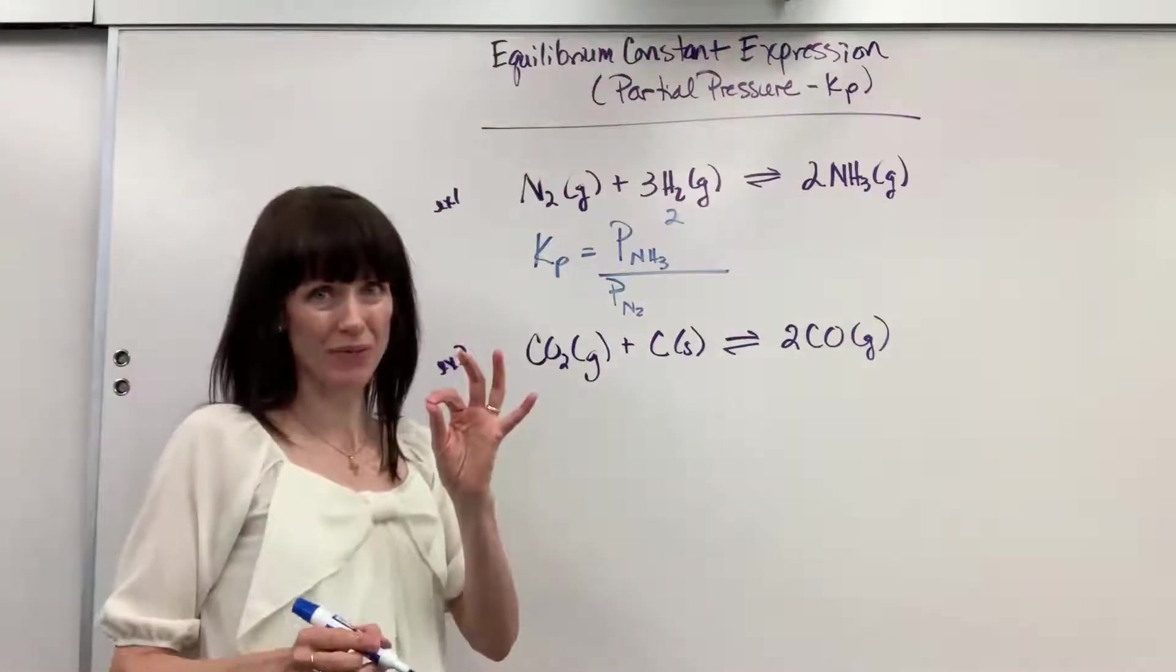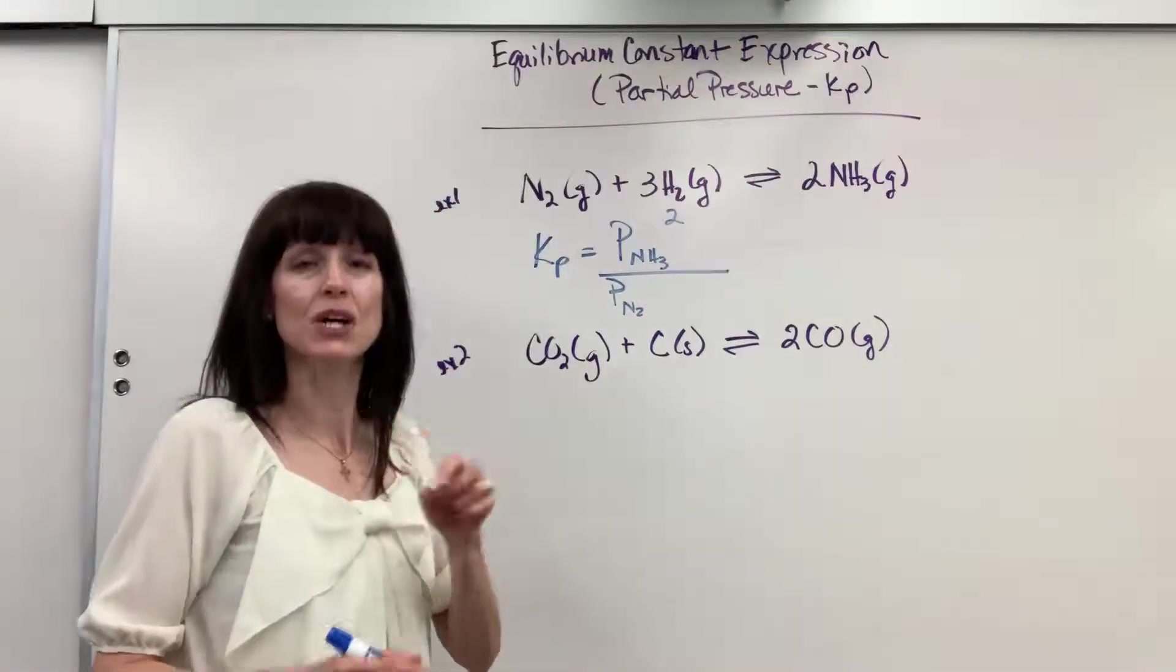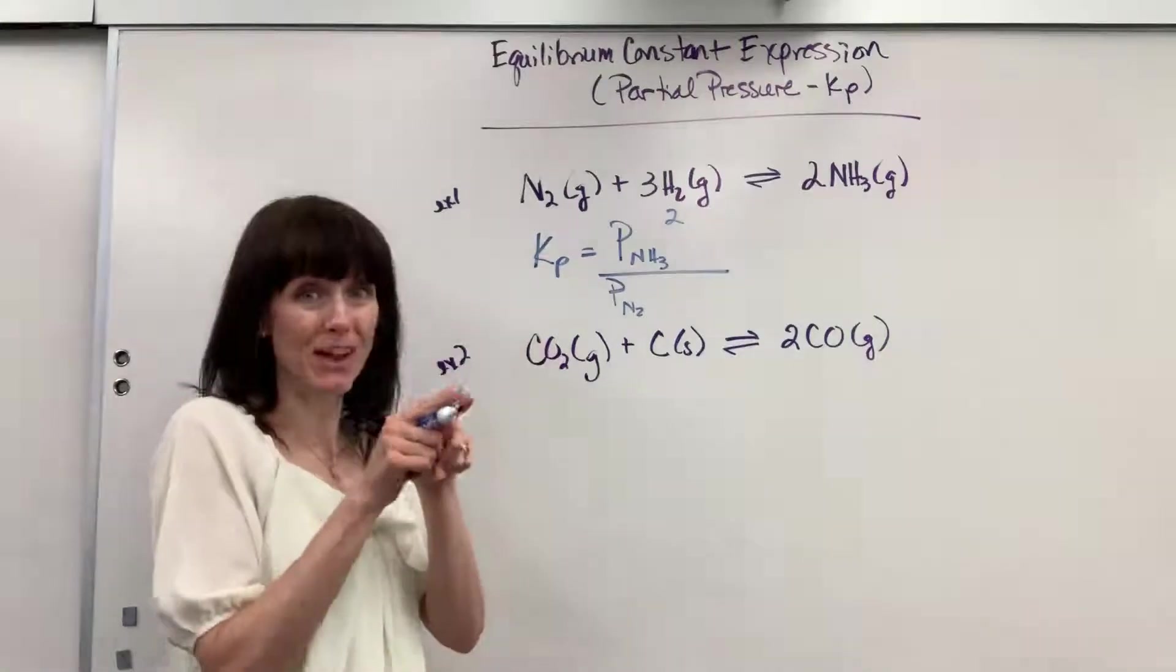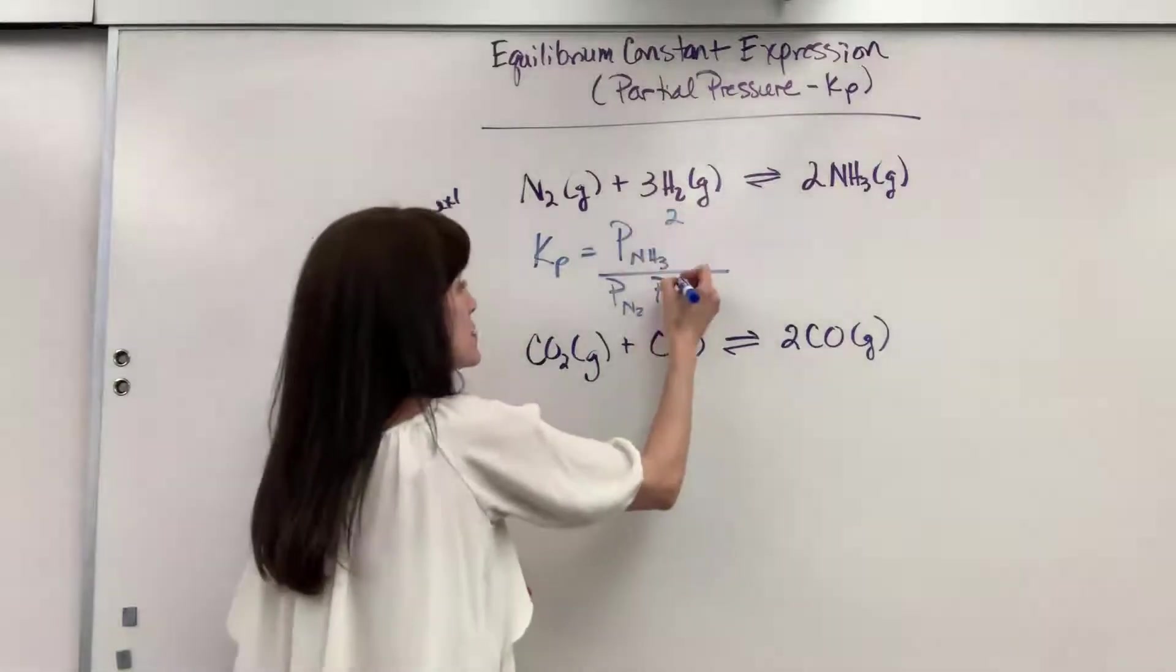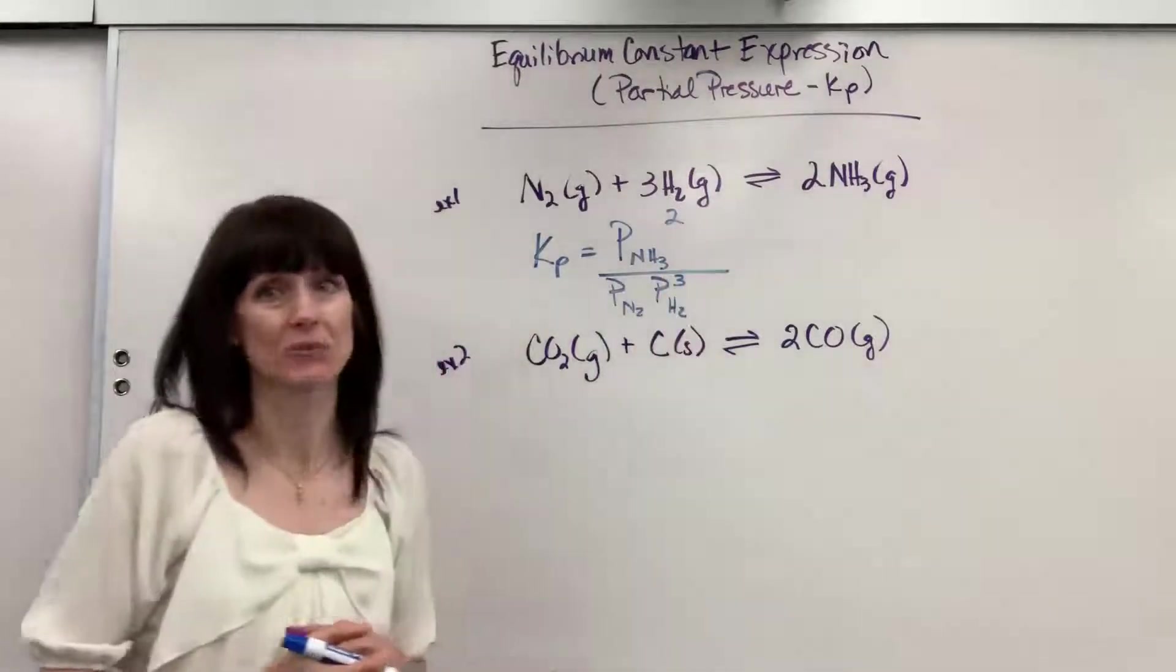Times - be so careful - when you have multiple reactants or products, you multiply them. So multiply times the partial pressure of hydrogen, and its coefficient is 3, so its exponent is 3, so that's going to be cubed.